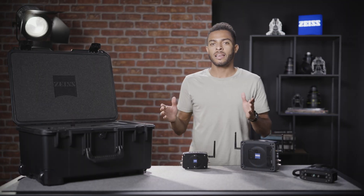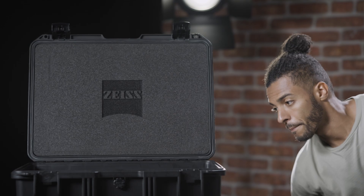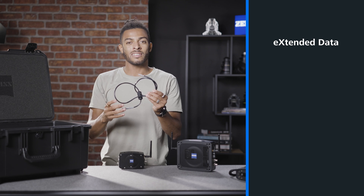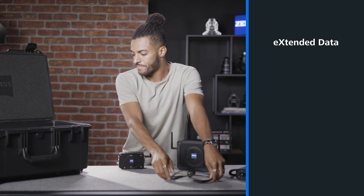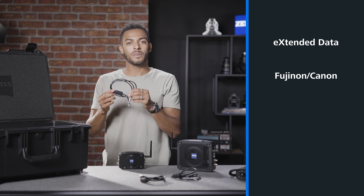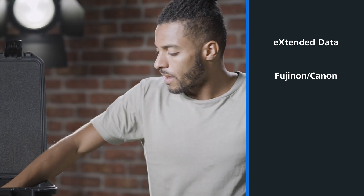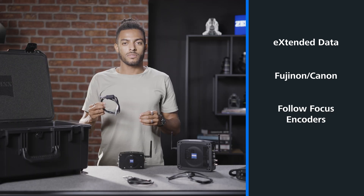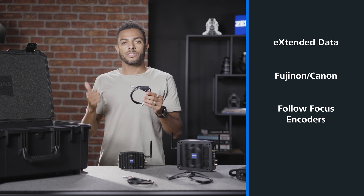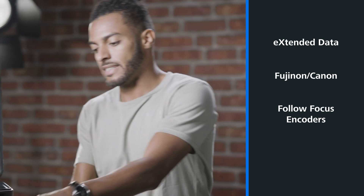Now let's have a look at our encoder options. First, we have our XD cable, which will be used with all of our Zeiss lenses for extended data. Next, we have our Fujinon and Canon encoders, which can be plugged directly into a virtual port on a broadcast lens. We also support many follow-focus systems, with separate encoders for different follow-focus setups. Whether you're using Tilta, Teradek, Preston, or Cam NC Motion, we have follow-focus encoders that are easy to use and easy to set up.